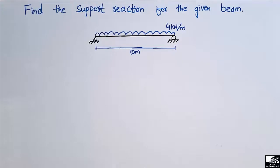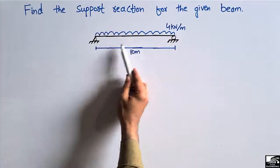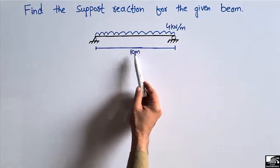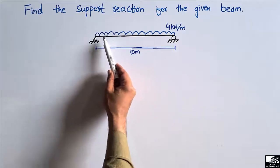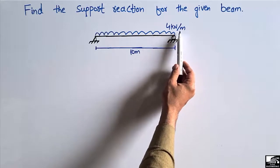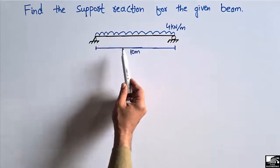Hello guys, welcome back to AC1 Engineering YouTube channel. Please subscribe to the channel for daily civil engineering videos. Today we are going to find out the support reaction for a given beam. This is a simply supported beam of length 10 meters, and there is a uniformly distributed load of 4 kilonewton per meter on this simply supported beam.